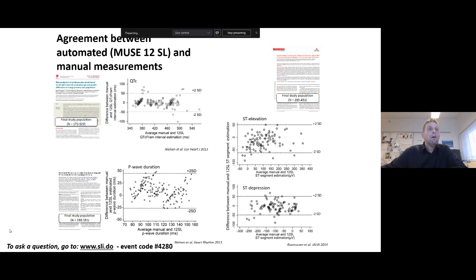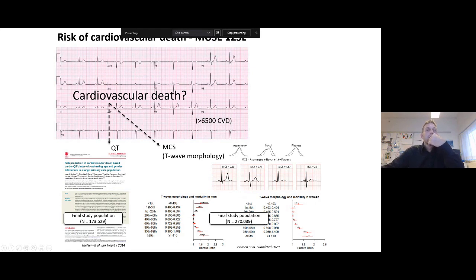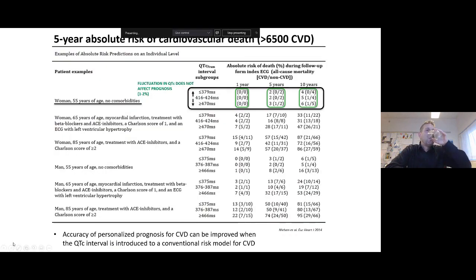So, we also use the 12SL measurements from MUSE together with the Danish health registries to assess the risk of cardiovascular death. Here, I've shown two studies that we're doing. One with the QT interval in cardiovascular death and another study with the morphology of the T wave and cardiovascular death. Now, we can use our ECG measurements in combination with conventional risk models for cardiovascular death. So, here we can see that for a 55-year-old woman with no apparent disease, her risk of cardiovascular death within one to 10 years is not affected very much by the different levels of QT interval. Only about one to two percent when the QT interval fluctuates.